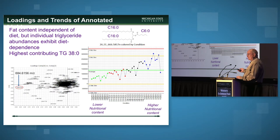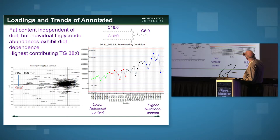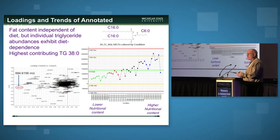Which lipids are most responsible for these differences? In the loadings plot, being far from the origin means contributing a lot to discrimination of sample categories. One particular lipid identified has two saturated 16-carbon fatty acid chains. Milk contains a fair amount of short-chain fatty acids. As we go from the low-nutrition negative up to the positive, this lipid reflects that the more nutritious the food, the more of this lipid ends up in the milk.